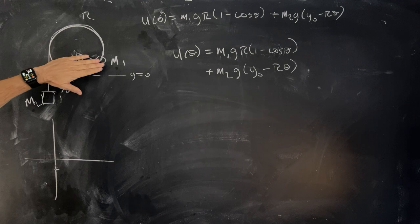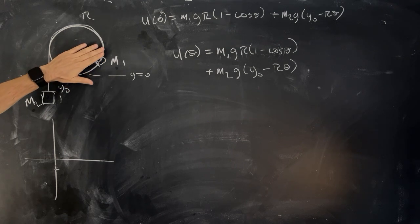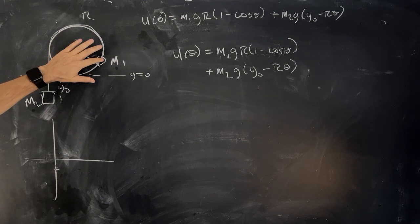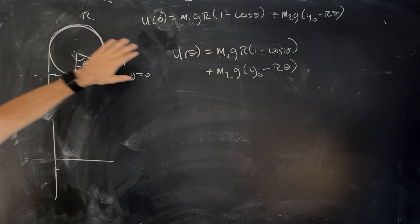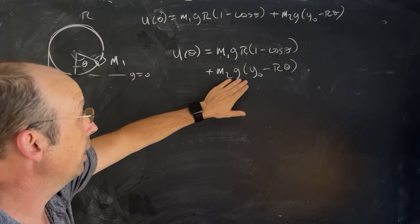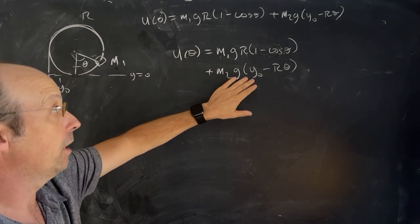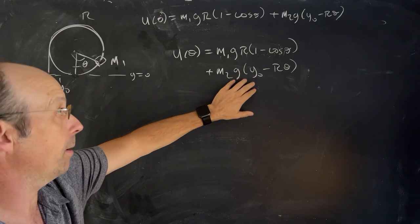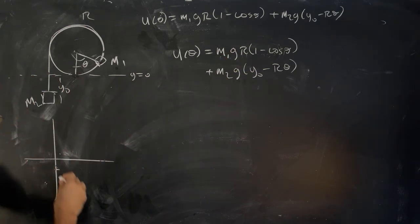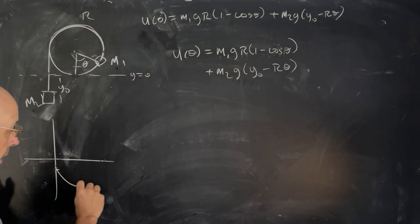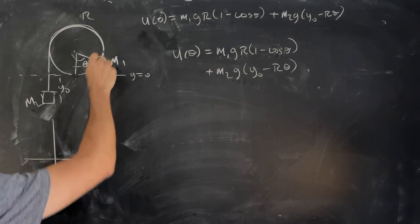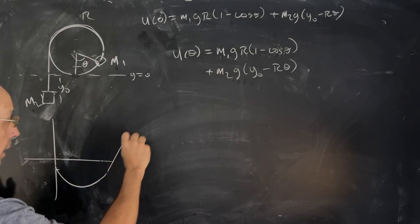Now as theta increases, what's going to happen right here is that this is going to move up. So this term will become more positive. That term becomes more negative. But they're not the same. This is going to become more negative than that becomes positive. So it actually looks like this. And then the other term is going to take over. And it's going to go like that.